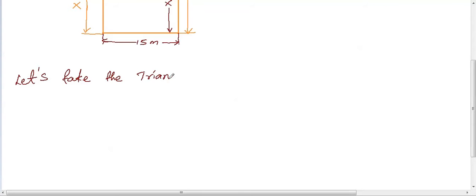So, in this rectangle triangle opposite side is 24 minus x. And angle is 30 degree. And adjacent side is the distance between two poles which is 15 meters.